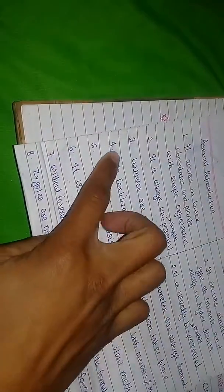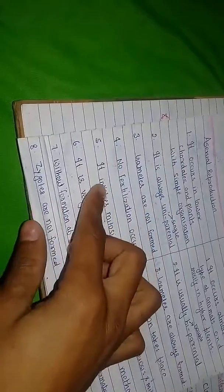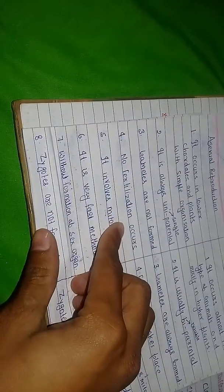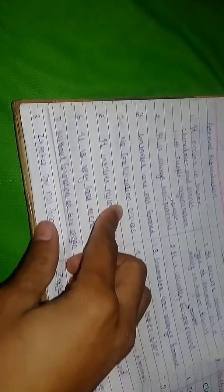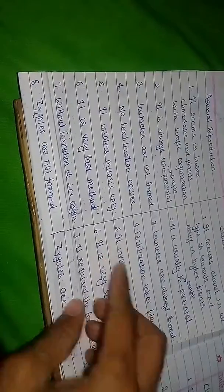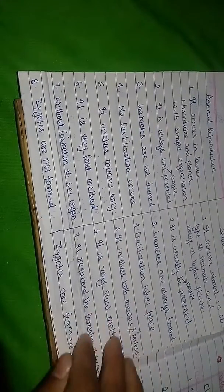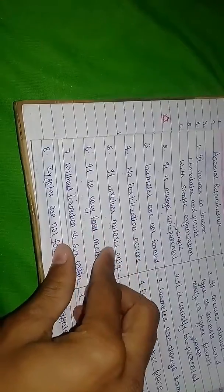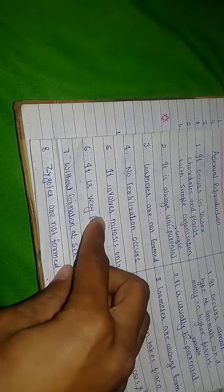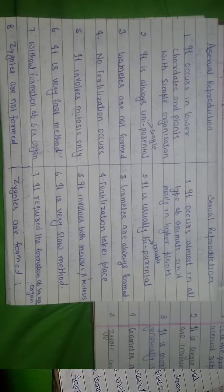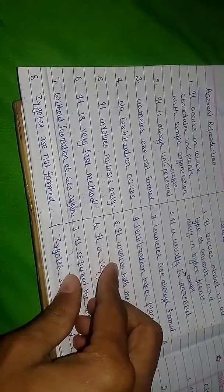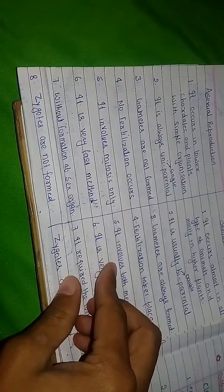And fourth one is: no fertilization occurs in asexual reproduction. But in sexual reproduction, fertilization takes place. And the fifth point is: it involves mitosis only. It means asexual reproduction is always in mitosis division.